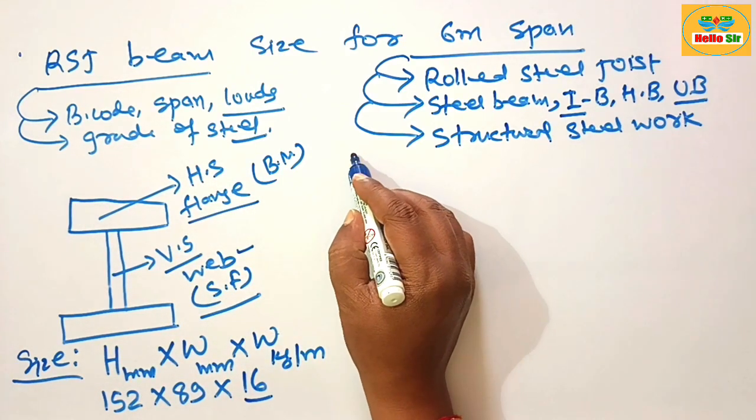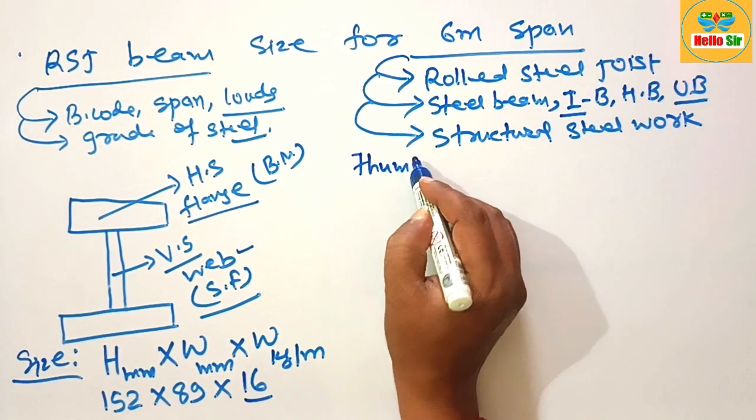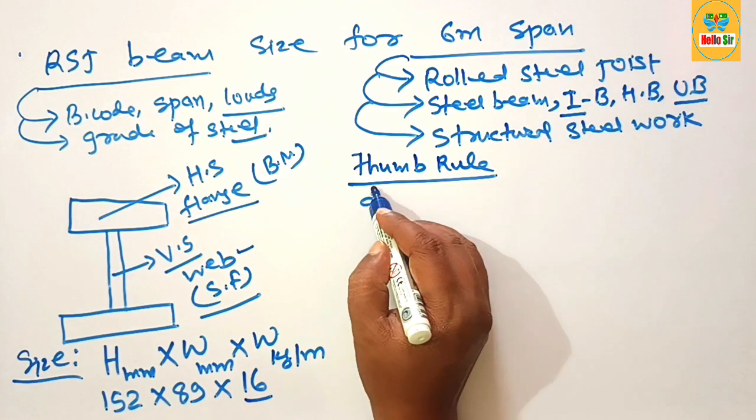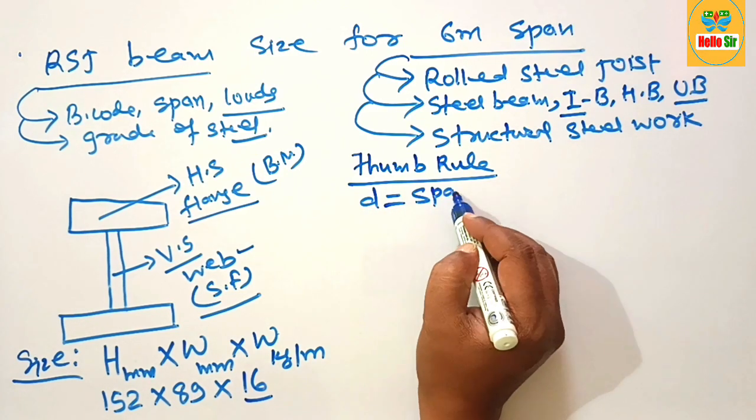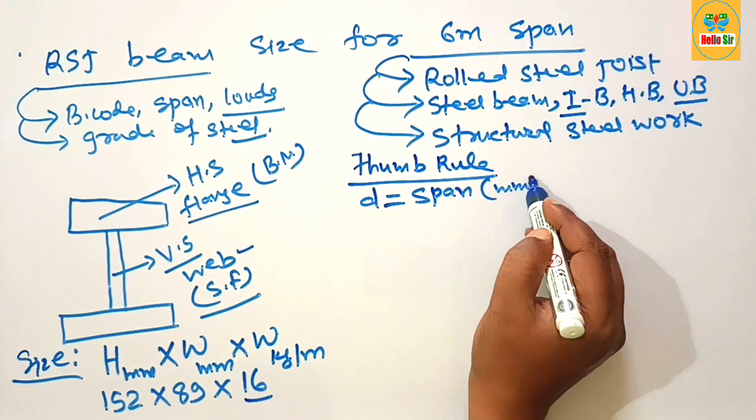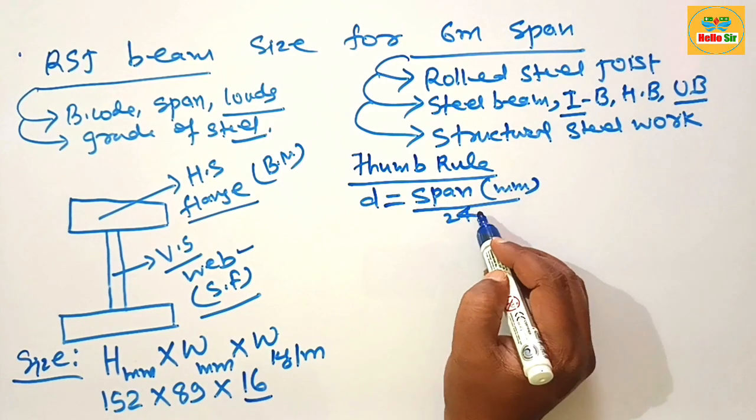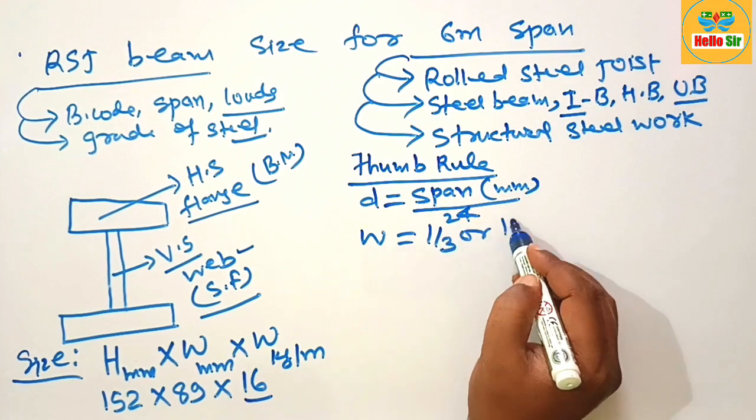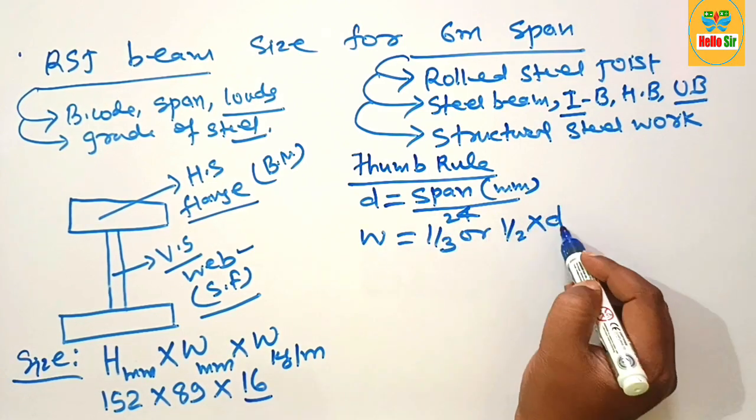Here we find out the size of RSJ beam according to thumb rule. What is the thumb rule? The depth section of the beam: divide your span in mm by 24. And the width section of the beam is one third or one half of depth section of the beam.